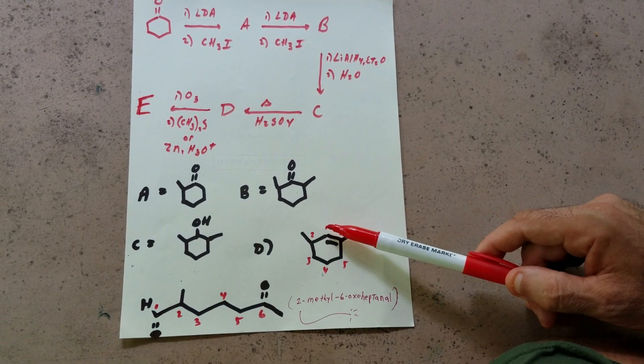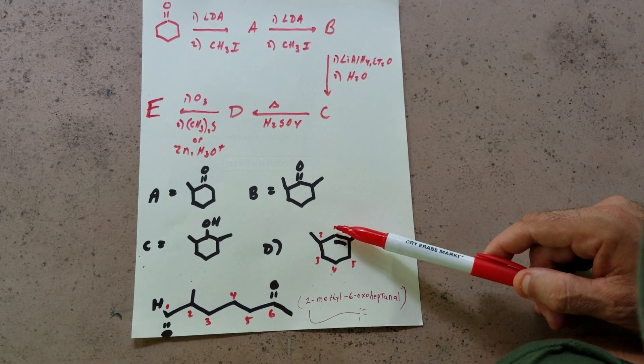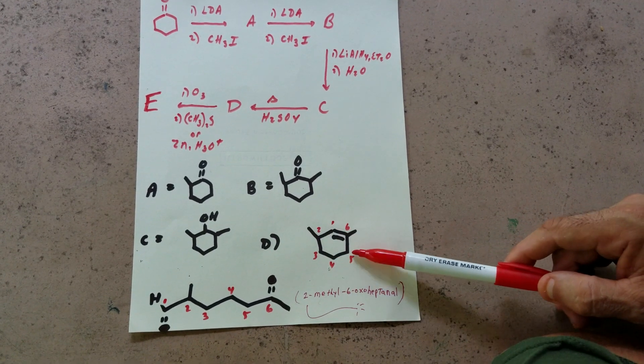Now, what I'm going to do is number the carbons in the ring so no one gets lost. One, two, three, four, five, six.